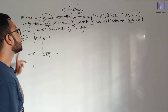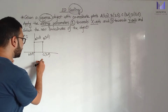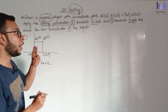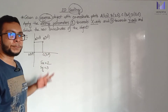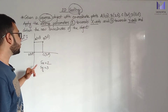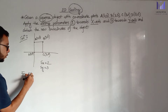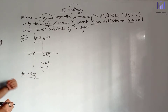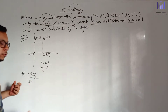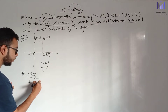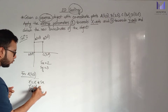We apply the scaling parameters: sx equals 2, and sy equals 3. The scaling formulas are: x-prime equals x multiplied by sx, and y-prime equals y multiplied by sy. We will now use these to find the new transformed coordinates.